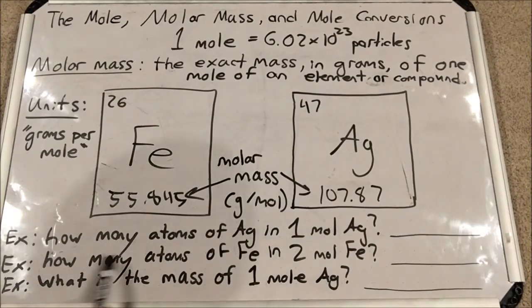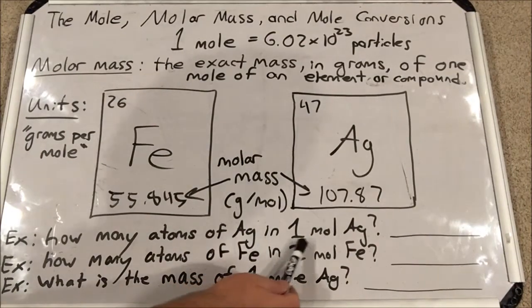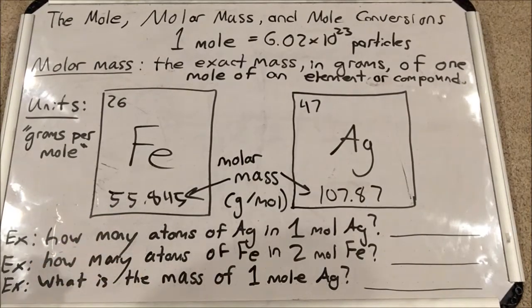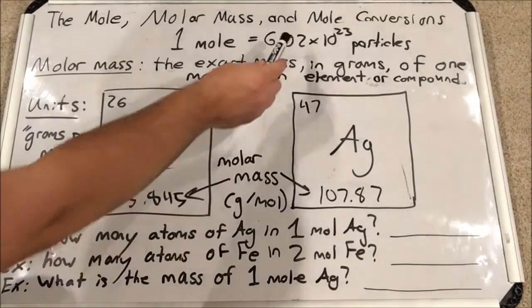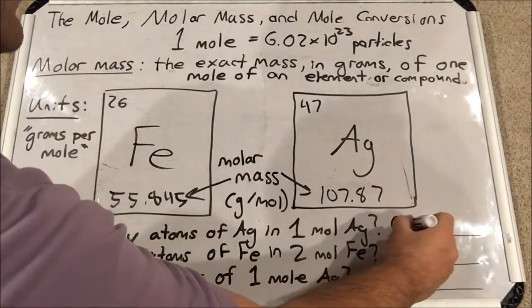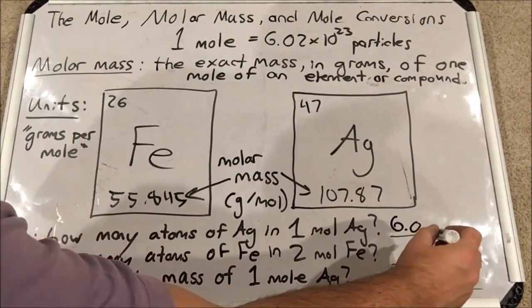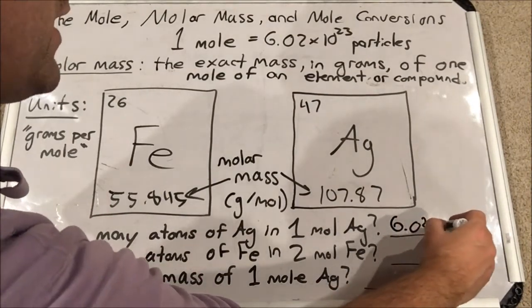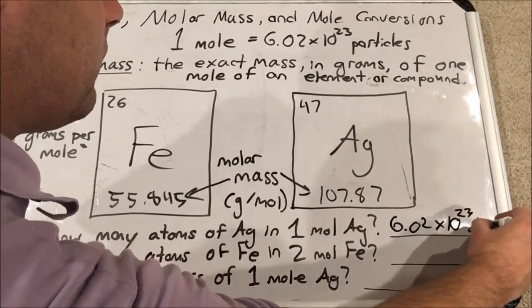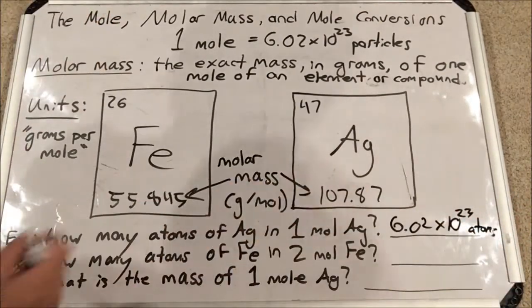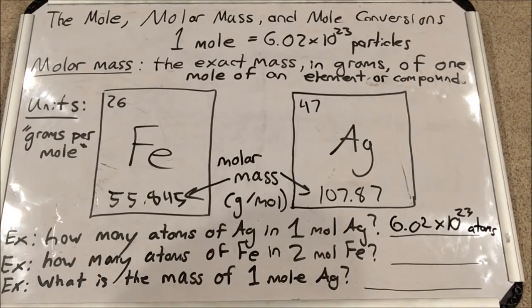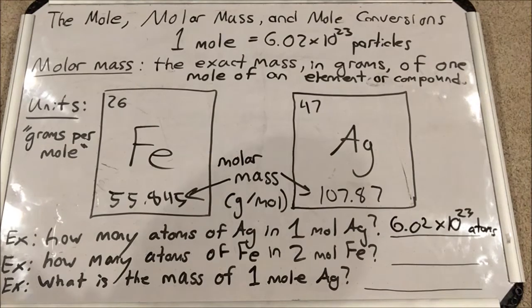Now I have some questions to keep you on your toes. First: how many atoms of silver are in one mole of silver? This isn't a trick question. If I have a mole of anything, I have 6.02 times 10 to the 23 of that thing. So the answer is 6.02 times 10 to the 23 atoms. If I'm asking for atoms, I am looking at Avogadro's number.